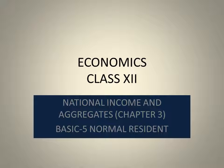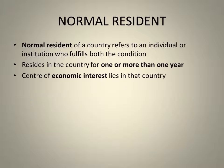Hello students, today we will discuss the normal resident of a country. This is Basic 5 in National Income and Aggregates, Chapter 3, where earlier we discussed the economic territory of a country. A normal resident of a country refers to an individual or institution who fulfills both conditions: first, the person must be residing in that particular country for one or more than one year, and second, their center of economic interest lies in that country.